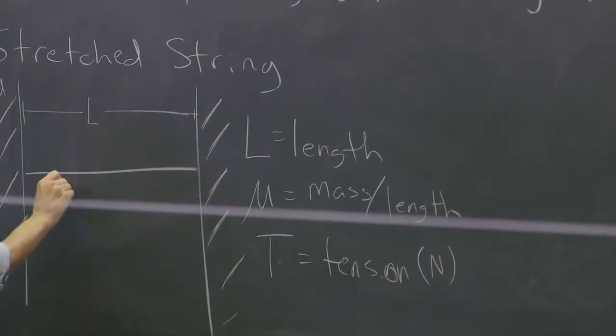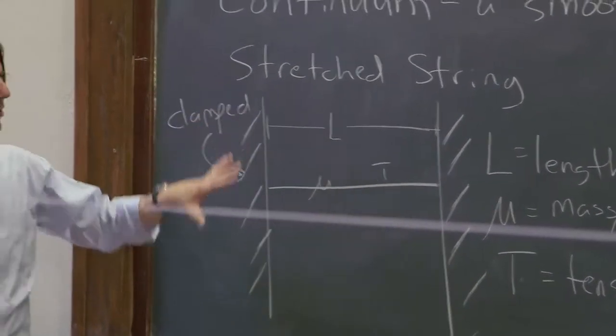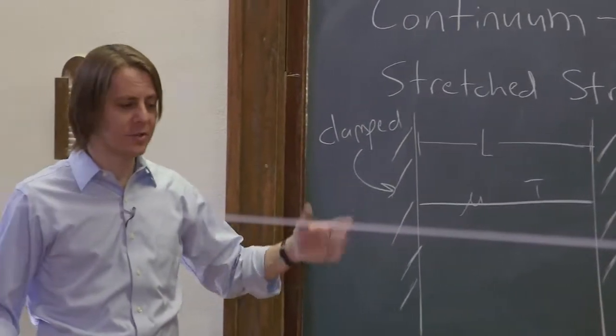Once you have those three things, so mu is inherent to the string, and T is also inherent to the string. Once you have those three things, you have defined this continuum. And you can start doing calculations of what will it do.